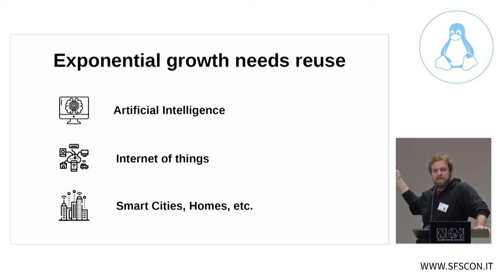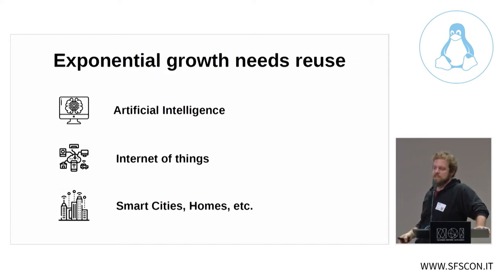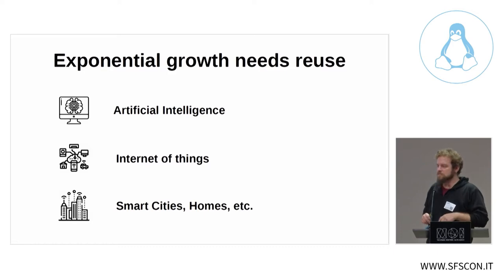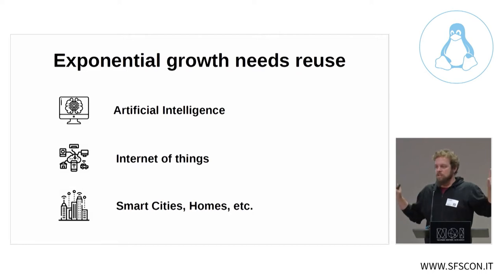It is especially important to reuse things and have efficient software when we think about what will happen this decade. We will see exponential growth of devices, of the software needed to run those devices, and of the energy needed to run them — particularly in the fields of artificial intelligence, the Internet of Things, and smart everything: smart cities, smart homes, smart agriculture. So let's reuse software so we can save more resources in production and in efficiency.